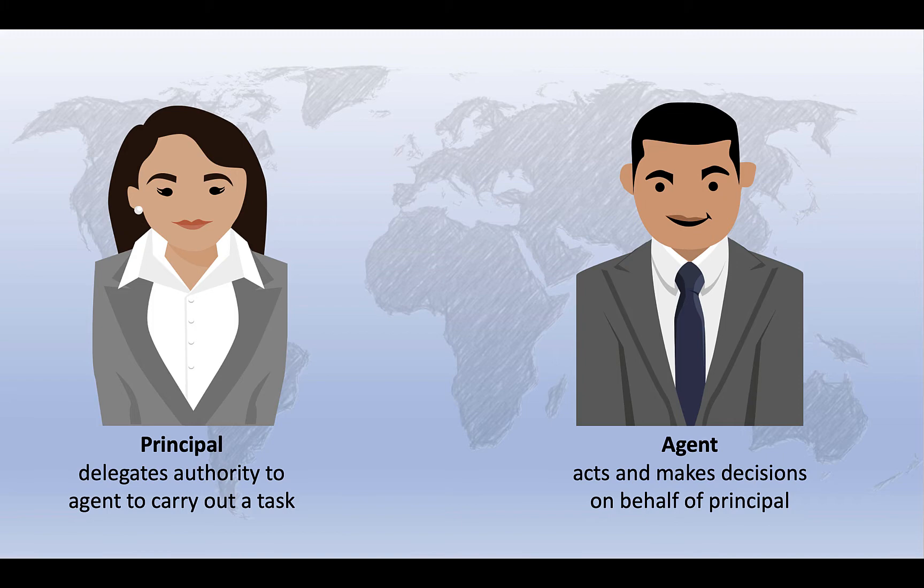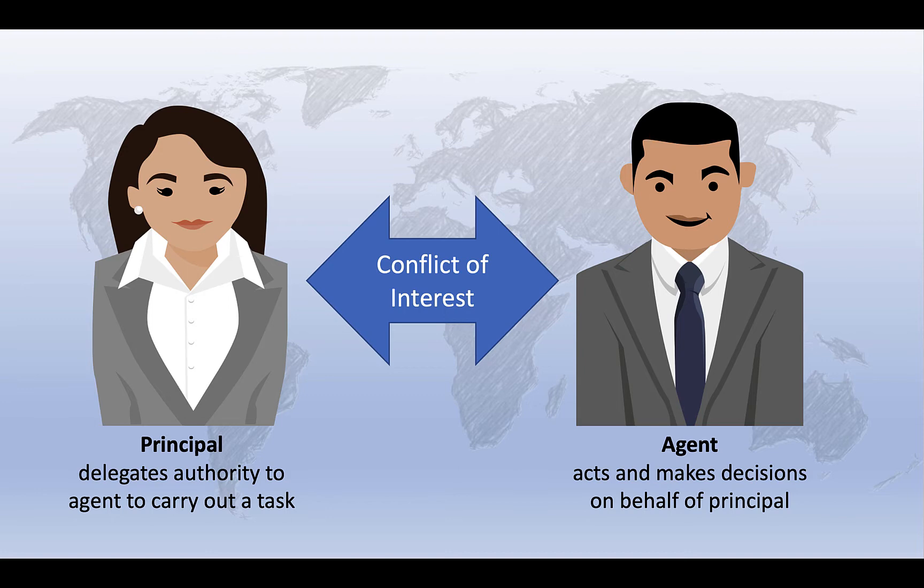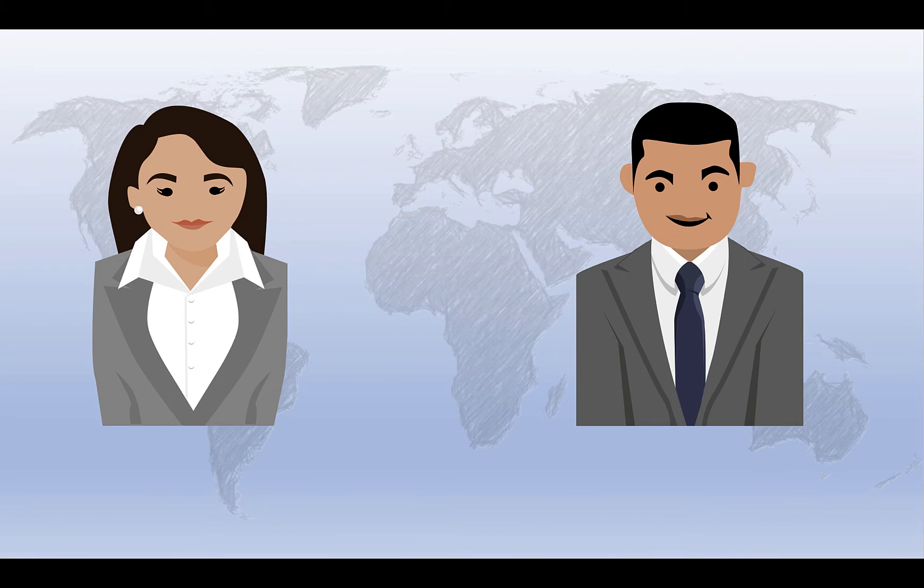But what happens if the interests and actions of the principal and the agent are not aligned? This is the realm of the principal agent problem. The concept itself emerges out of the business and economics literature to describe the tensions between owners of a business and the managers of that business.